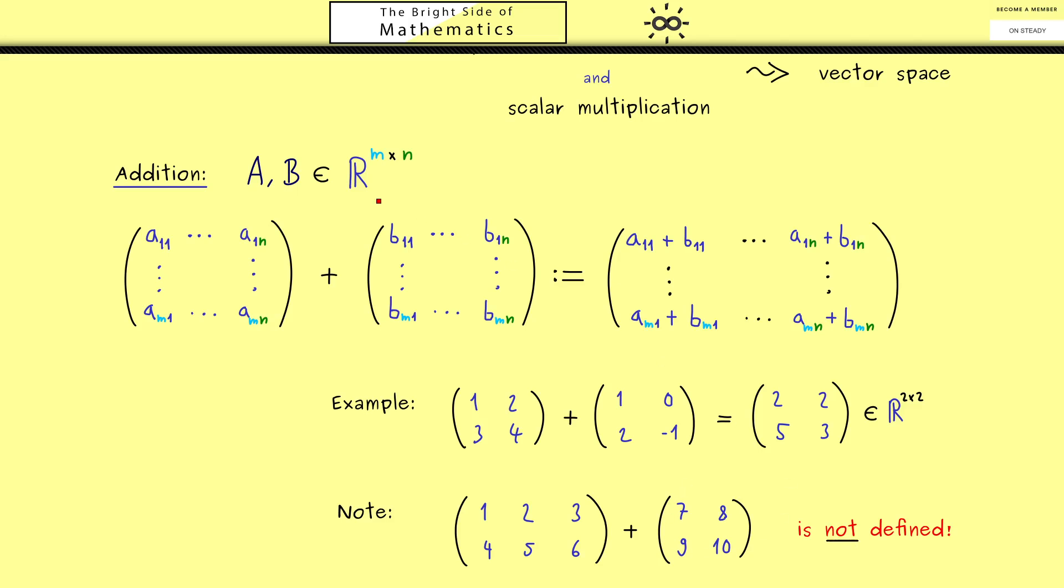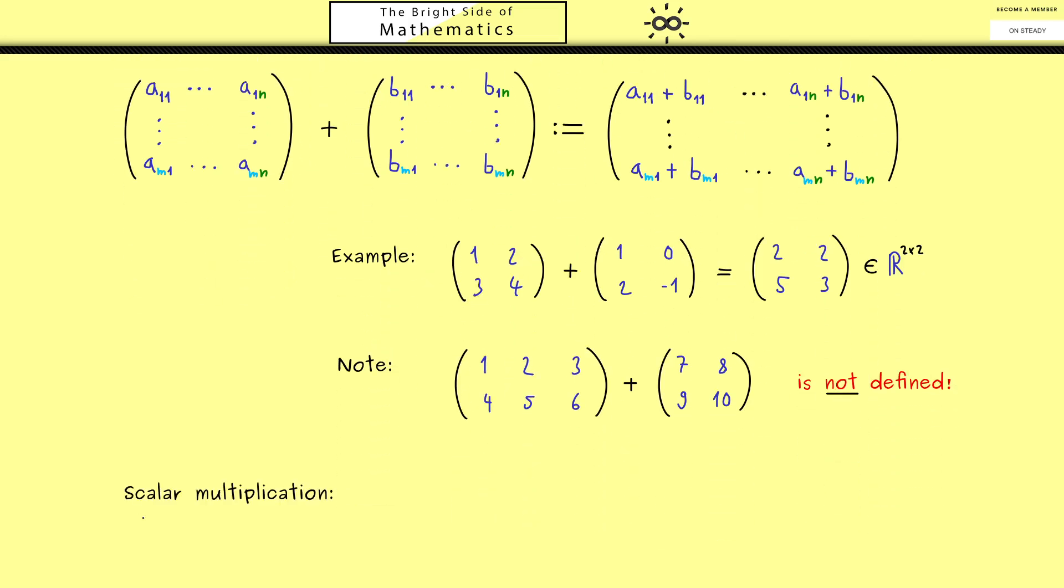Okay so this is the addition and the next thing we will define is the scalar multiplication. This means now such a table of numbers, a matrix, is multiplied by a scalar.